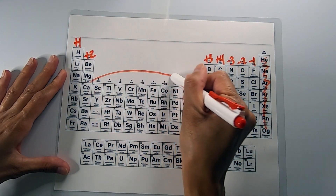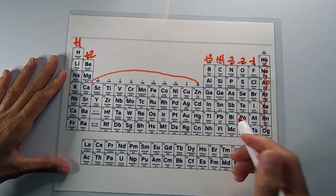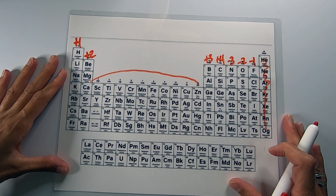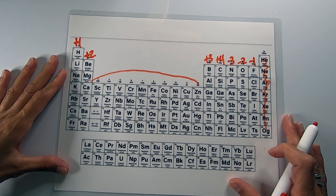The transition metals tend to have variable oxidation numbers depending on how many electrons they lose upon forming bonds with atoms and compounds. That's what you have to know before we calculate oxidation numbers.